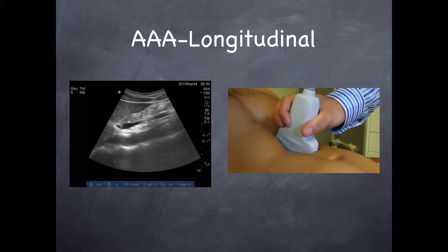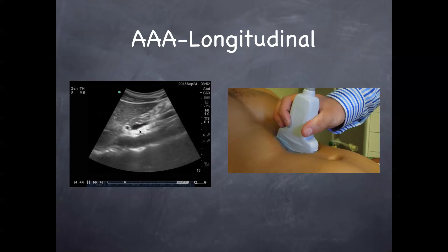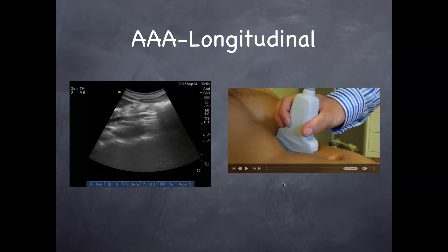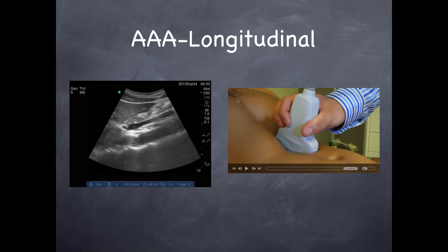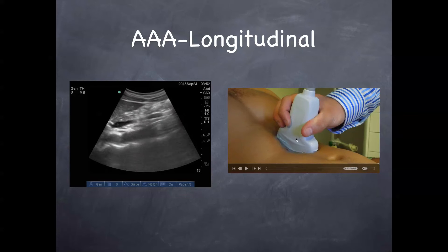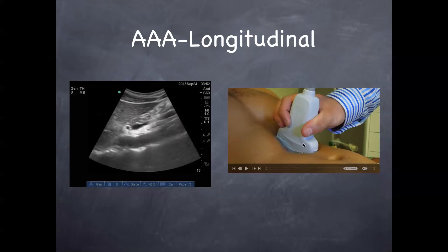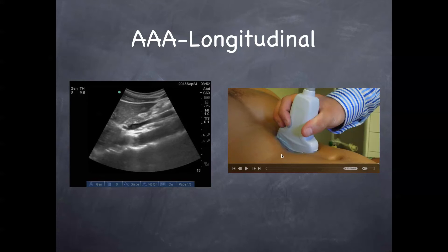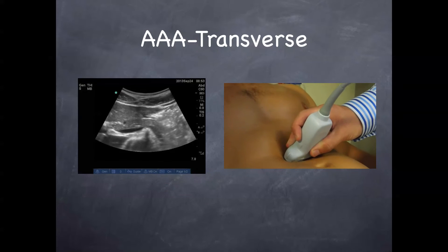This is a longitudinal view. The big teaching point here is to make sure you're not getting the IVC. If you think of the anatomy, the IVC would generally be more on the right side of the patient, returning blood to the right atrium, whereas the aorta is going to be more on the left side of the patient, giving blood down to the body. When you get this longitudinal view, make sure you're not getting the IVC. You can do that by moving your probe back and forth on the belly, as well as confirming with a transverse view.